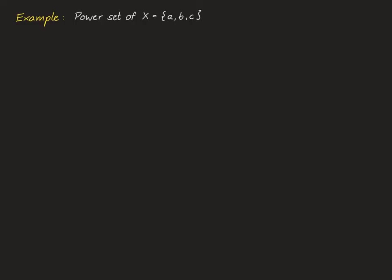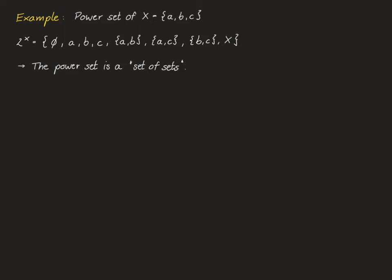For an example, let's construct the power set of X = {a, b, c}. The power set includes all possible subsets: the empty set, the single-element subsets {a}, {b}, {c}, the two-element subsets {a,b}, {a,c}, {b,c}, and of course the full set {a, b, c} itself. So you can think of the power set as a set of sets.